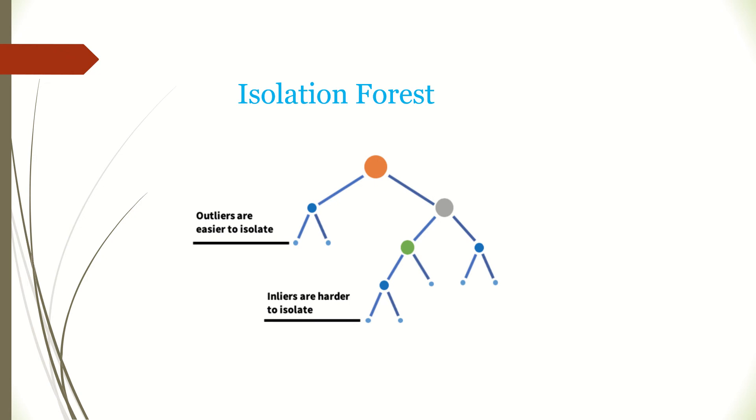But again, the thing is it does partitioning of the dataset in a very different way, and more so it is basically an unsupervised machine learning model. So let's say there are outliers in the data, and mostly the assumption is there are more normal points in the data in comparison to outliers, which are fewer in number.